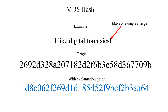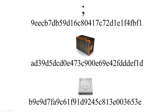Hashes are extremely sensitive to change. If we take our previous example, 'I like digital forensics,' and add an exclamation point at the end, the resulting hash is completely different. No matter how small or large the input — whether it's something as small as a single semicolon or something as large as the collected works of George R.R. Martin, or even the entire contents of a hard disk drive — the MD5 hash, and all others for that matter, will produce the same size output.